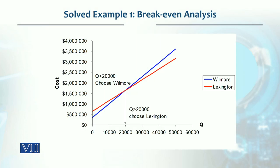On this basis, if we plot this, then in this graph Wilmore's total cost line is being plotted, and this other line being plotted is for Lexington — both fixed cost and variable cost are included, depending upon number of units.